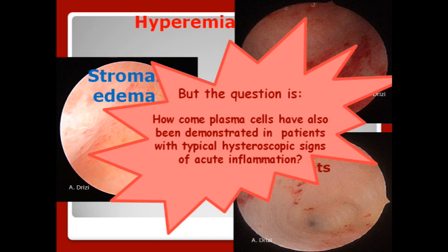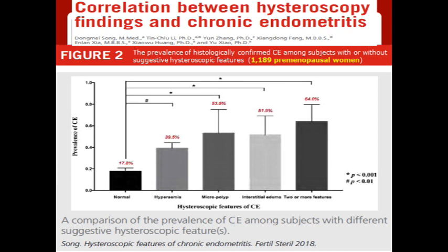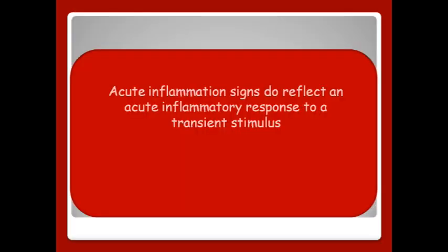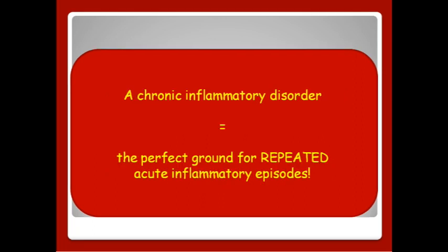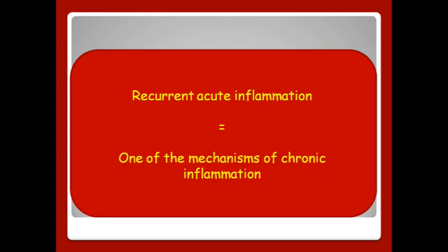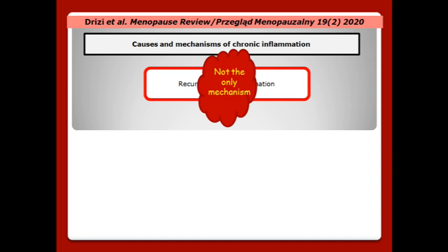But the big question is: how come plasma cells have also been demonstrated in patients with typical hysteroscopic signs of acute inflammation, like hyperemia, edema, and hemorrhage? Correlations have always been reported in the literature. The explanation is that true acute inflammation signs do reflect an acute inflammatory response to a transient stimulus; however, they could also reflect a persistent or chronic inflammatory disorder, because a chronic inflammatory disorder is very well known to be the perfect ground for repeated acute inflammatory episodes. Also, recurrent acute inflammation is one of the mechanisms of chronic inflammation — yet not the only mechanism.